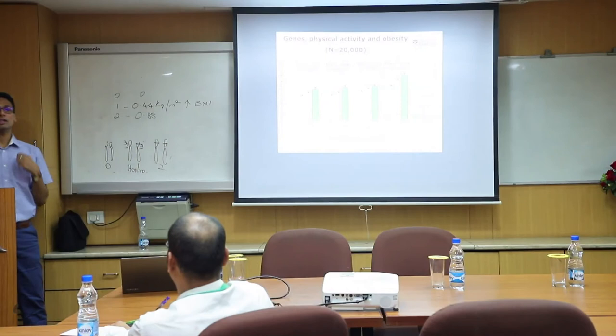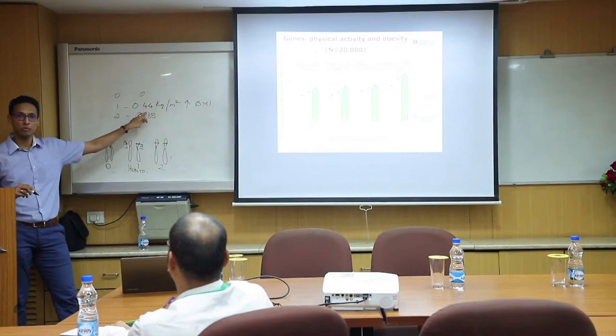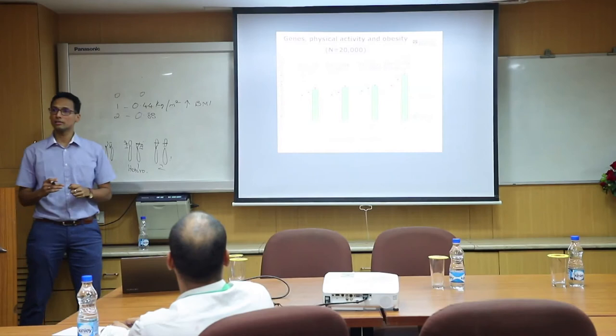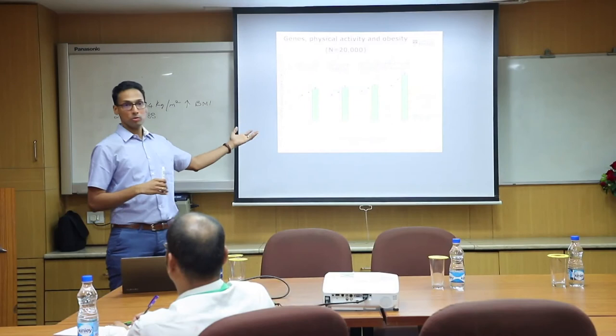Whereas if you look at the active, moderately active, and moderately inactive groups, the effect is 0.2 — which is half of 0.44. So if you do more levels of physical activity, you can reduce your genetic risk of obesity. That is the take-home message: if you do more levels of physical activity you can overcome the genetic risk of obesity, but if you lead a sedentary life you are increasing that genetic risk.